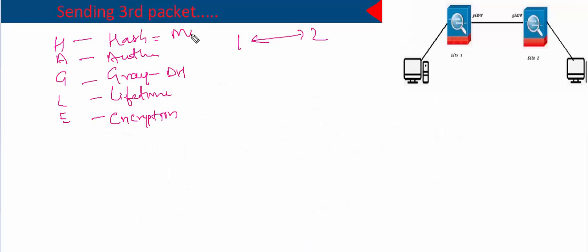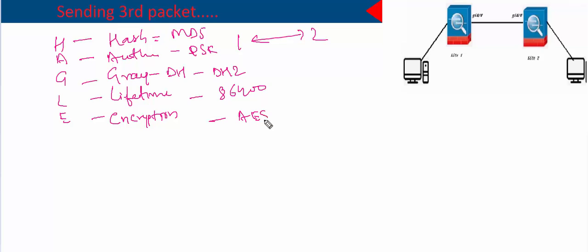Let's say they have come to an agreement to use MD5 as the hash, pre-shared key as the authentication type, Diffie-Hellman group 2, lifetime of 86,400 seconds, and AES as the encryption. They have agreed on these parameters, so both the initiator and responder now know they are going to use these five parameters going forward.